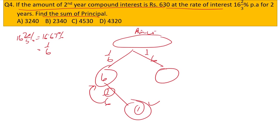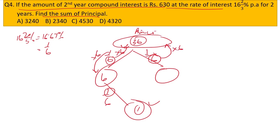With interest = 1 and principal = 6: scaling up, if 1 unit gives 6, then the principal in the second layer is 36. The second layer interest is 6 (since 1 × 6 = 6). So the second year compound interest consists of 6 units plus 1 unit, giving a total of 7 units representing the second year's compound interest amount.